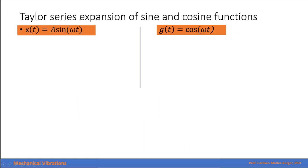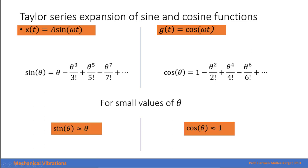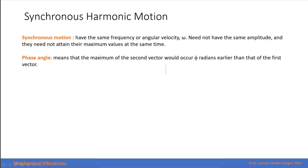If we do the Taylor expansion of the sine and cosine functions, we get series expressions for each. This is very useful when we want to linearize the system for small values of angular displacement. For small angles theta, we can say that the sine function approaches theta and the cosine function approaches 1.